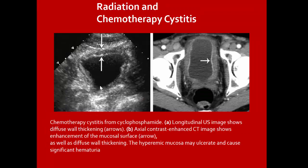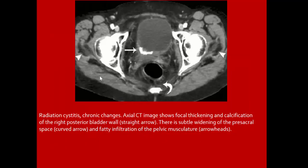Colovesical fistula from diverticulitis on CT scan shows air in the bladder outside of fistula communication between sigmoid and the bladder. Radiation and chemotherapeutic cystitis from cyclophosphamide: hologram shows diffuse wall thickening; axial CT shows enhancement of the mucosal surface and diffuse wall thickening; hyperemic mucosa may ulcerate causing significant hematuria. Radiation cystitis chronic changes: axial CT shows focal thickening and calcification of the right posterior bladder wall, subtle widening of the pre-sacral space, and infiltration of pelvic musculature with fatty infiltration.